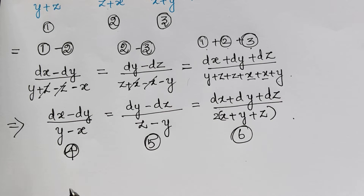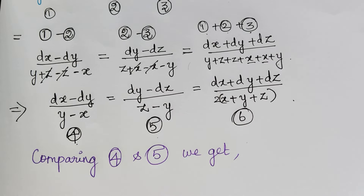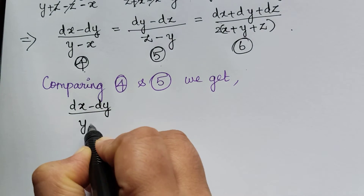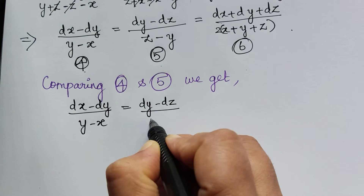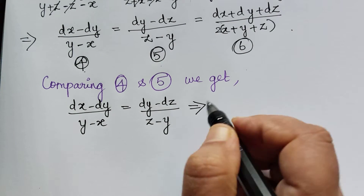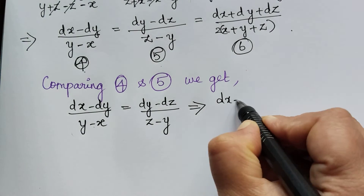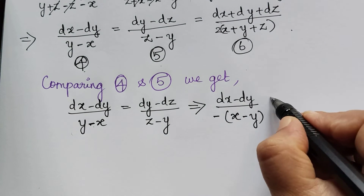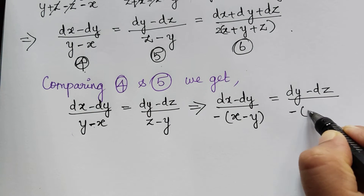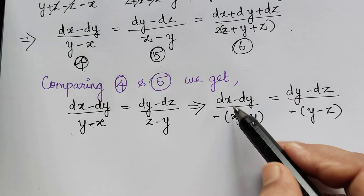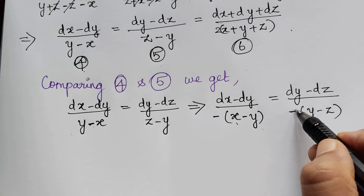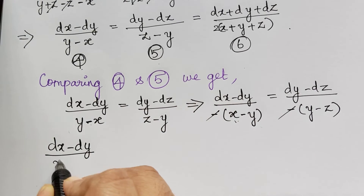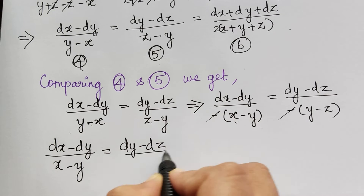Now we compare ratio 4 and ratio 5: dx minus dy divided by y minus x is equal to dy minus dz divided by z minus y. Taking the negative sign outside, we can rewrite this as dx minus dy divided by x minus y is equal to dy minus dz divided by y minus z, cancelling the two negatives.